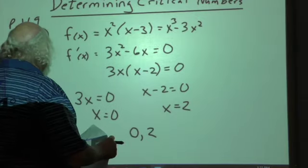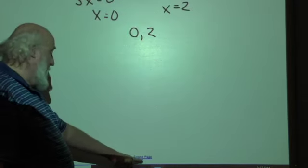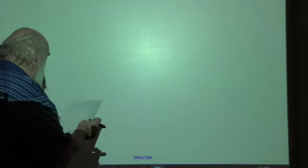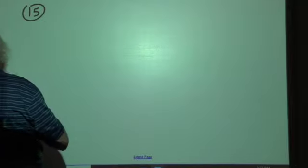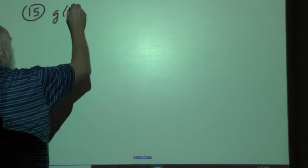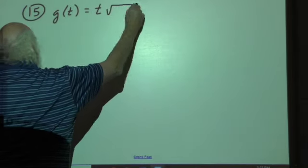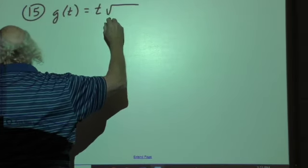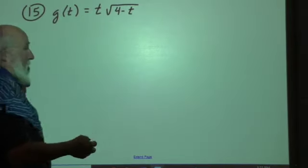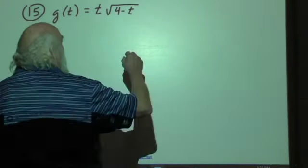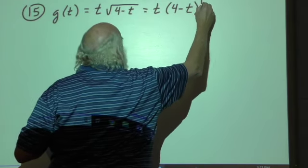Okay? Not too bad. A little factor involved. That's pretty easy factor in fact. So let's take a look at number 15. Number 15, we have g of t is equal to t times the square root of 4 minus t. Now again, I'm going to rewrite this to get rid of that radical.